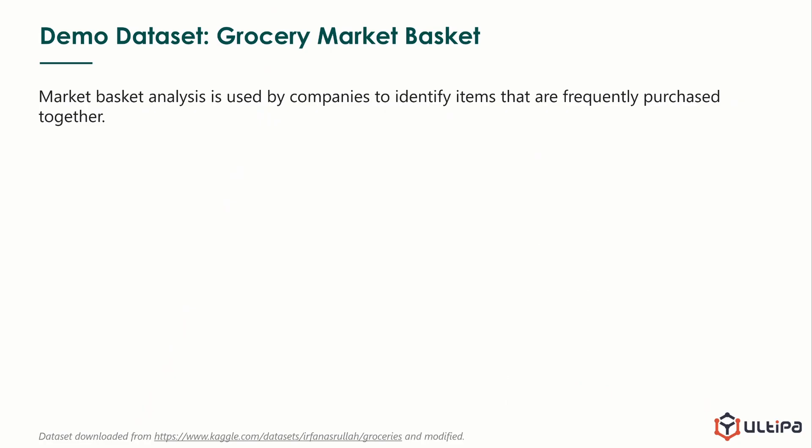In the demo, we will consider market basket analysis, which is used by companies to identify items that are frequently purchased together. When we shop at the grocery store, we see that some items are always placed near each other, such as bread and jam, baby lotions and diapers, so we can easily buy them together. Online stores are also similar in their way of recommendations. Instead of relying on intuition to create product combinations, we could use market basket analysis to make decisions based on previous transactions.